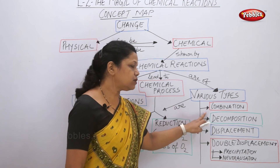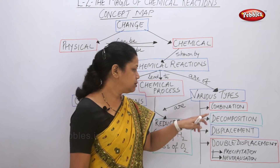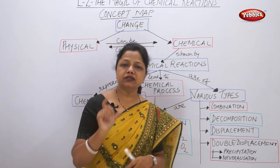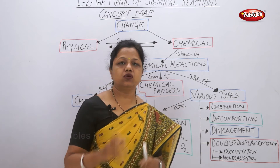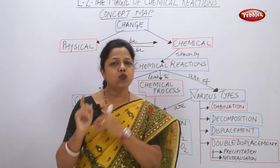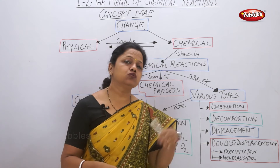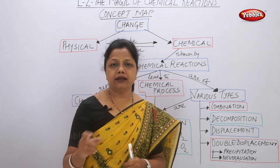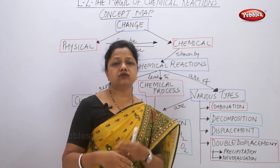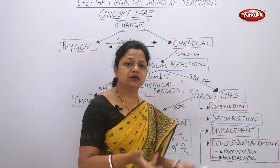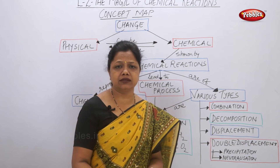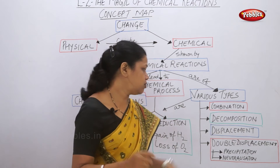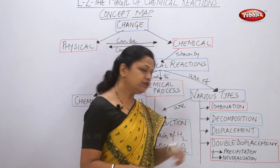The second type is the decomposition reaction. As the word suggests, decompose means to break down. Here the reactant is one, but the products may be two or three. Because of heat, light, electricity, or the presence of an acid or base, the reactant breaks down — that is called a decomposition reaction.